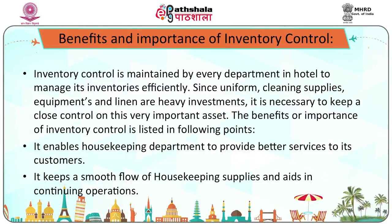There should be an effective purchasing system to consistently maintain the inventory levels set by the executive housekeeper. To maintain inventory levels, the executive housekeeper needs to determine the par level for each inventory item. Inventory control is maintained by every department in the hotel to manage its inventory efficiently. Since uniforms, cleaning supplies, equipment, and linen are very significant investments, it is necessary to keep close control on these important assets.